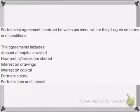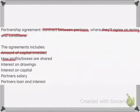What is a partnership agreement? It is a contract between the partners where they agree on the terms and conditions. The partnership agreement will include: the amount of capital each partner is investing, how the profits will be shared, the interest on drawings, interest on capital, partner salary, and the partner's loan and interest.